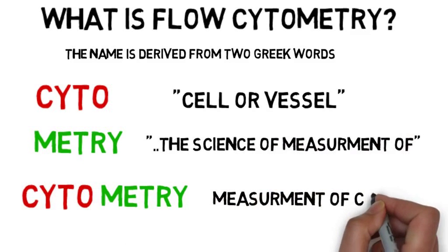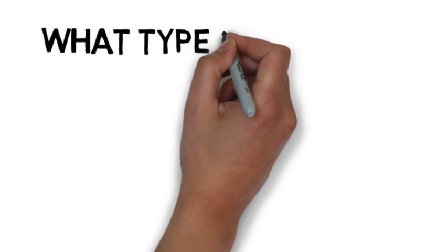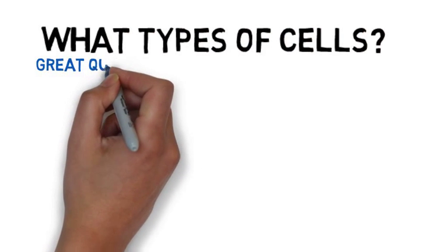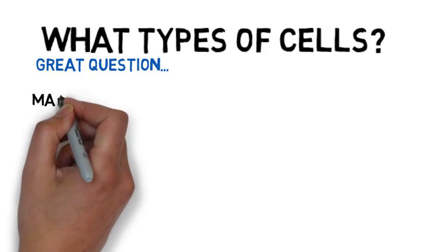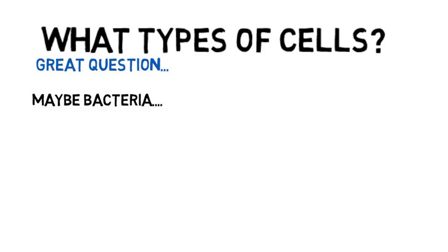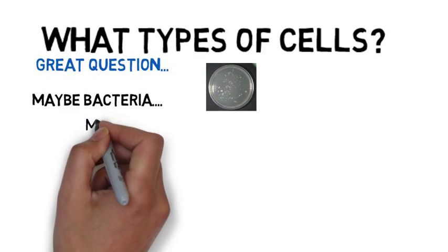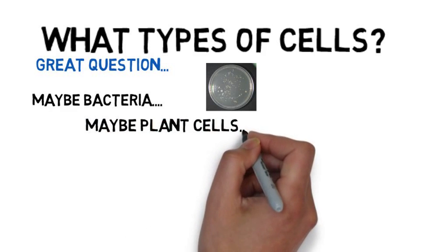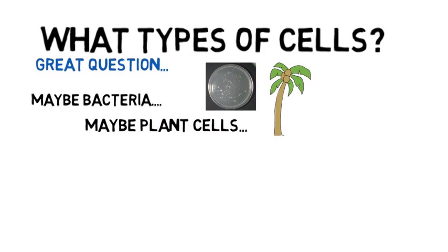Now you're almost an expert, but what sort of cells can these instruments look at? Well, that's also a great question. Any cell that you can suspend in a liquid. For example, it might be bacteria taken from a culture dish like your favorite Staph aureus, or possibly it could be a plant cell taken from lettuce or a tree leaf.